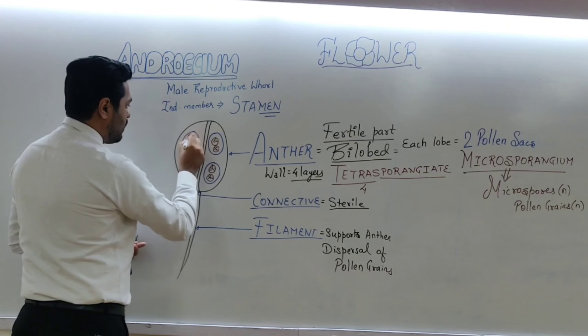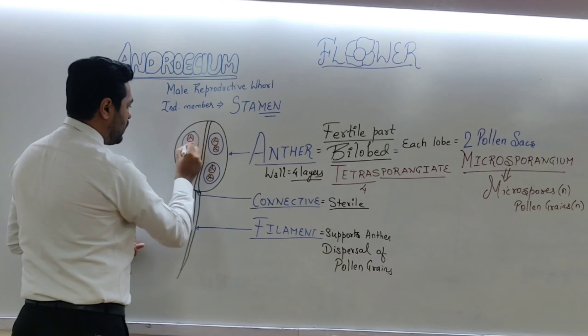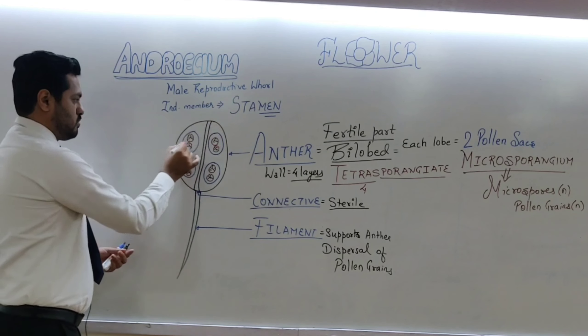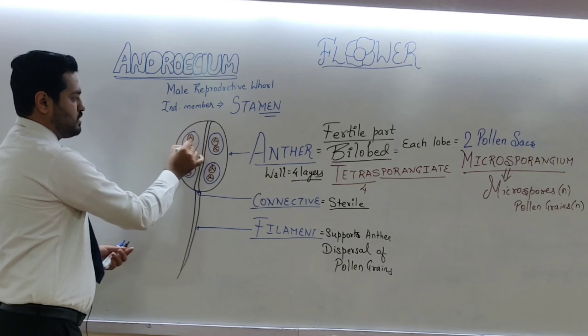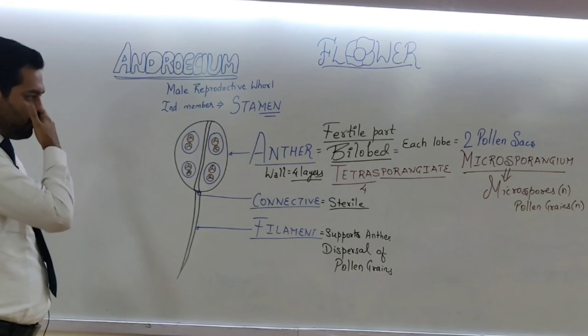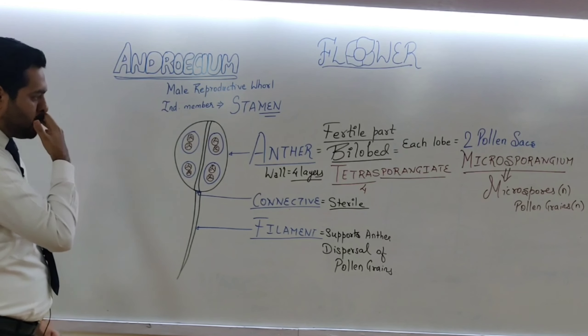Because there will be dispersal of pollen grains and a lot of wastage during that process, pollen grains are produced in very large quantities.